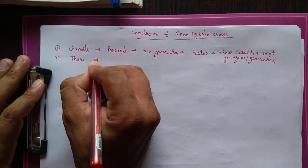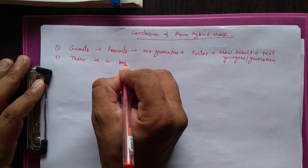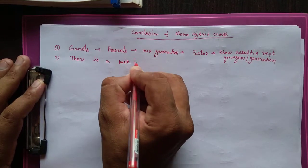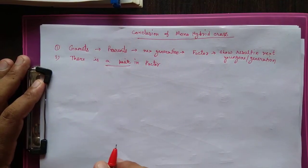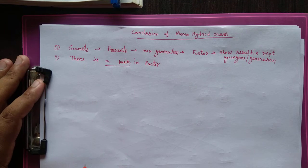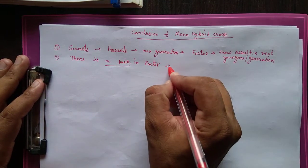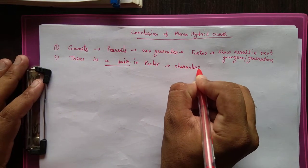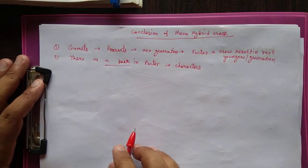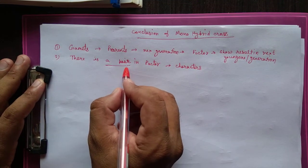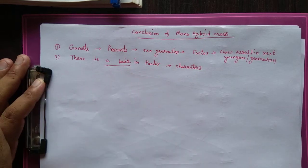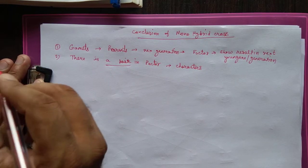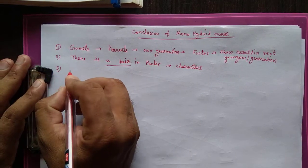The second conclusion is that there is a pair in the factor — meaning a factor has a pair of units which show characters. So the factor is composed of a pair: a unit factor having two units.